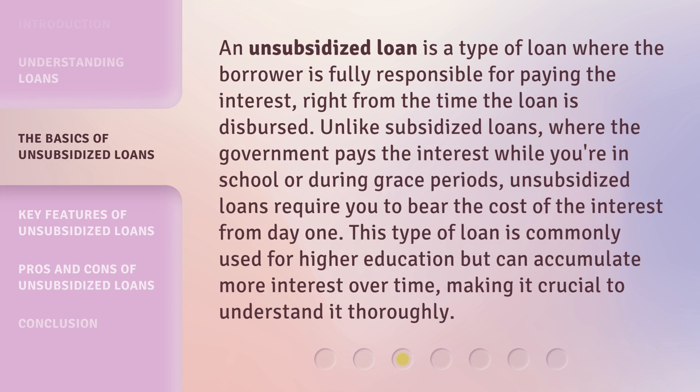An unsubsidized loan is a type of loan where the borrower is fully responsible for paying the interest right from the time the loan is dispersed. Unlike subsidized loans, where the government pays the interest while you're in school or during grace periods, unsubsidized loans require you to bear the cost of the interest from day one.